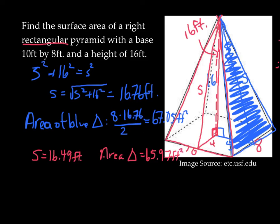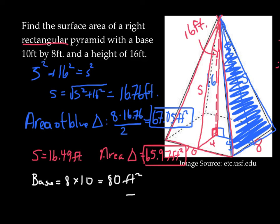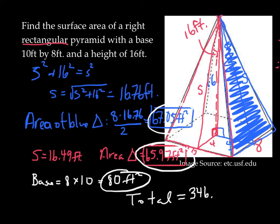From this point on, it's actually really going to be quite quick to answer this question. We have two triangles that are 65.97 square feet. We have two other triangles which are 67.05 square feet, and we have a base. The base is 8 by 10, so the base area is 80 square feet. If we add all the total area together, that is, we take two of these blue triangles, two of these red triangles, and our base, and we add it all together, we get, drum roll please, a total of 346.04 square feet.